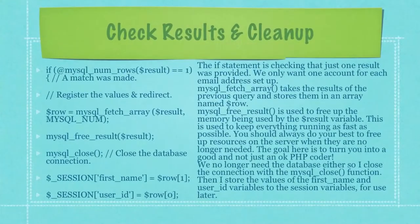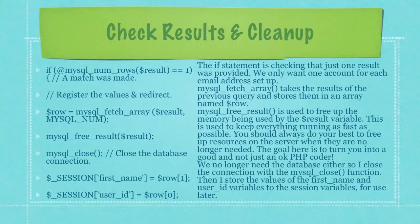The if statement is checking that just one result was provided. We only want one account for each email address set up. MySQL Fetch Array takes the results of the previous query and stores them in an array named row. MySQL Free Result is used to free up the memory being used by the result variable. This is used to keep everything running as fast as possible. You should always do your best to free up resources on the server when they are no longer needed. The goal here is to turn you into a good and not just an OK PHP coder.